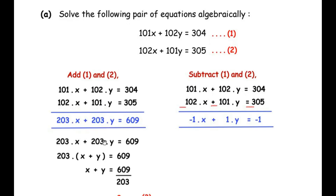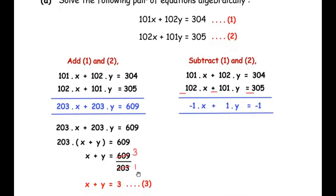Focusing on the first result — the equation 203x plus 203y equals 609 — we can see that 203 is a common factor. Taking it out, inside the bracket remains x plus y. Taking 203 to the other side, x plus y equals 609 over 203. Since 203 divides 609 exactly 3 times, we get the simpler equation: x plus y equals 3. This is equation 3.